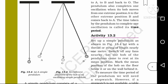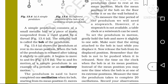Mark the mean position of the bob on the floor below it or on the wall behind it. To measure the time period of the pendulum, we will need a stopwatch. However, if a stopwatch is not available, a table clock is used.